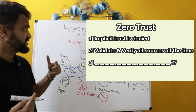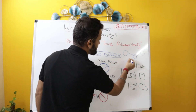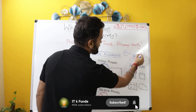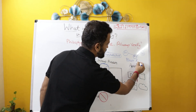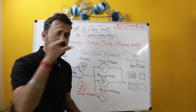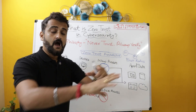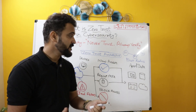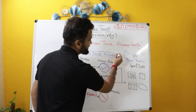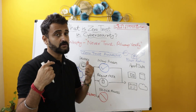The third thing zero trust advocates is having micro network segments — small segments rather than one big segment. This reduces the blast radius of the attack. Blast radius refers to how big an area is impacted by a bomb — similarly in a cyber attack, how much area an attacker can impact is the blast radius. So if you have micro segments, even if penetration happens in one segment, the other segments will still be secure. Zero trust says you have to always adhere to this principle.